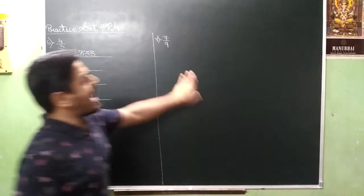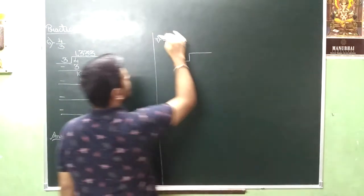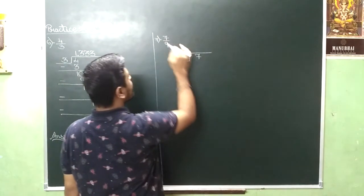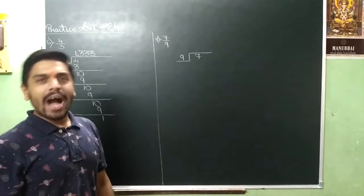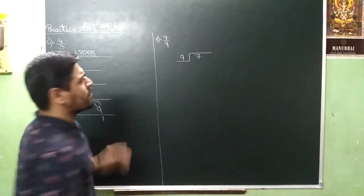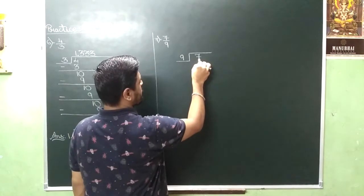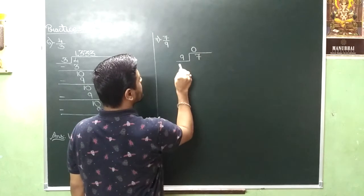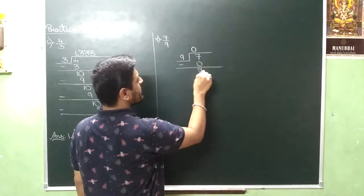And then your last and final sum is the numerator will become your dividend and denominator will become your divisor. Correct? Ab aap is ko divide karenge. So, 9 ke table mein 7 nahi aah hai. So you will be taking 9, 0 za 0. And the remainder will be 7.